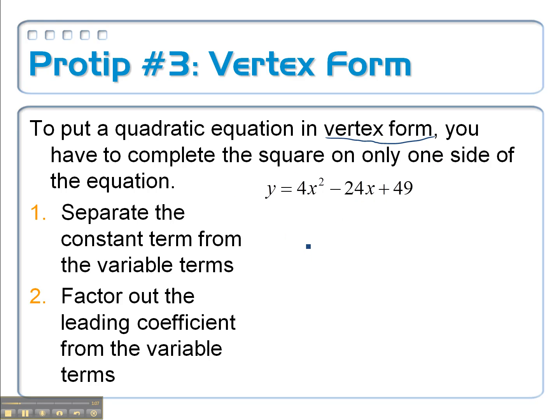So step 1 is to separate the constant term, that's this 49, from everything else. From the two variable terms, like so.